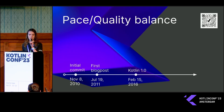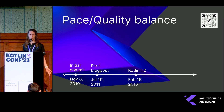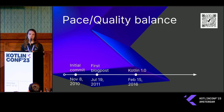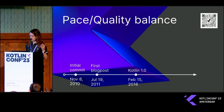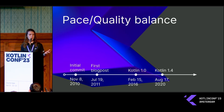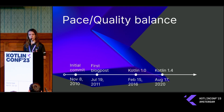In 2016 we had Kotlin 1.0. Ever since, we had a really fast pace — we were moving forward fast to deliver features to our users. We were excited, our users were excited, and we wanted to deliver as much as we could. In August 2020 we had Kotlin 1.4.